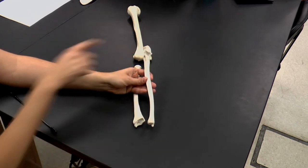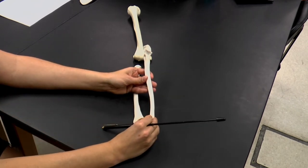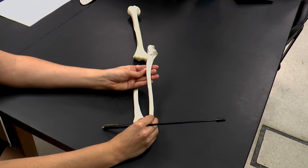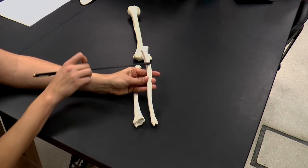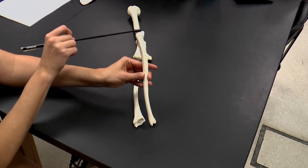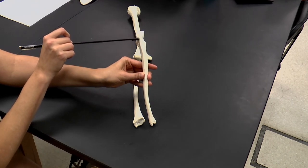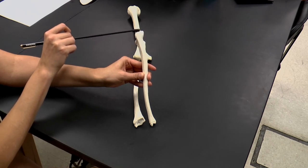So again, here we have the ulna and the trochlear notch. And an important part of the trochlear notch of the ulna is that we're going to rotate this around. So now we're looking at the back part of the ulna. And you can see that at the most proximal part of the trochlear notch, there's this sort of rounded part. This is called the olecranon process.